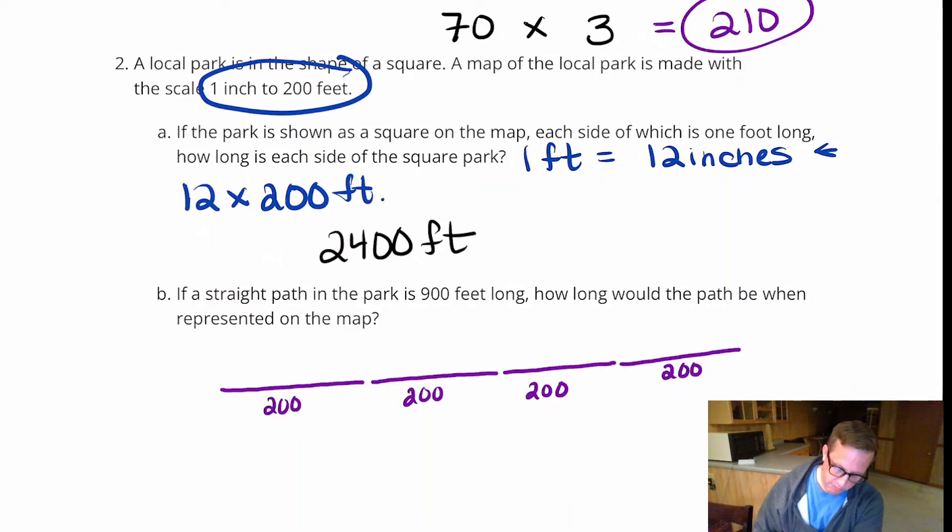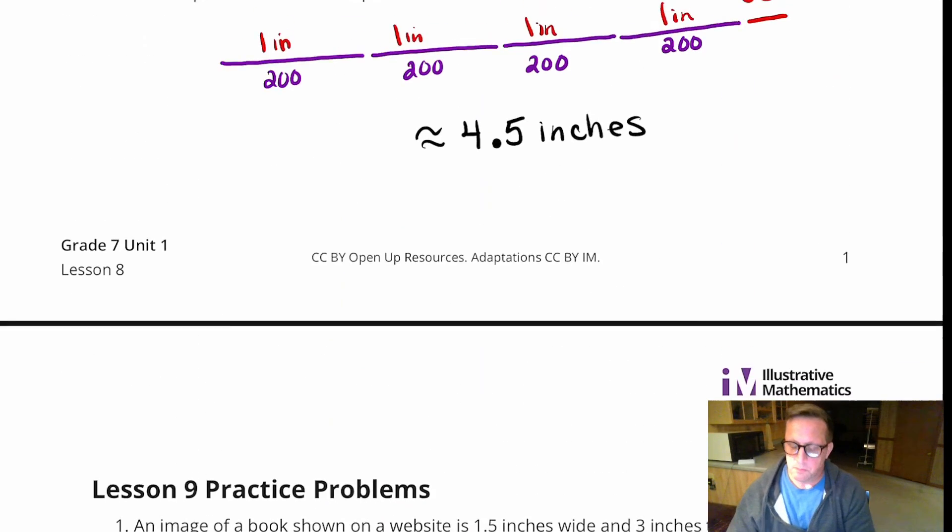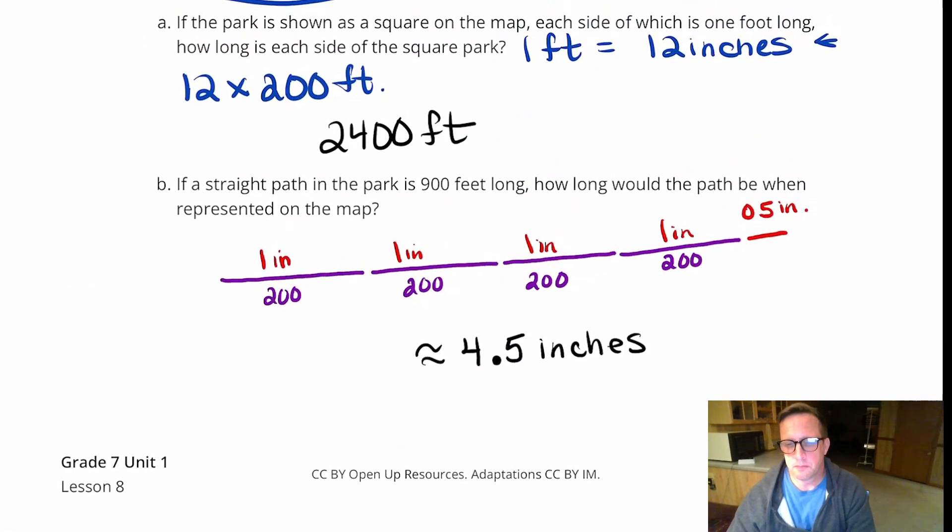So we're 100 feet away. Now, this is one inch, these are all one inch. And so we need another 100 feet, so another 100 feet would just be half inch. So how long would the path be when represented on the map? Probably around four and a half inches. So that's interesting.